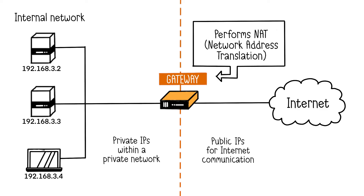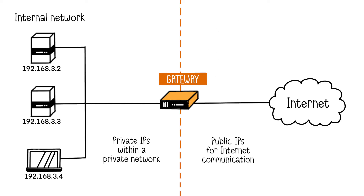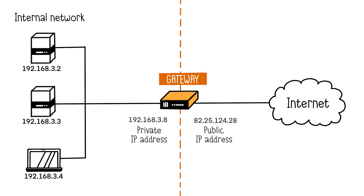Let's see how it works. All external communications pass through a gateway responsible for performing NAT for each communication. This gateway could be a router or a firewall. It has two interfaces: an internal network interface with a private IP address to communicate within the internal network, and an external network interface with a public IP address for Internet communication. The gateway acts as an intermediary between the internal network and the Internet, translating internal addresses to public ones, and vice versa.